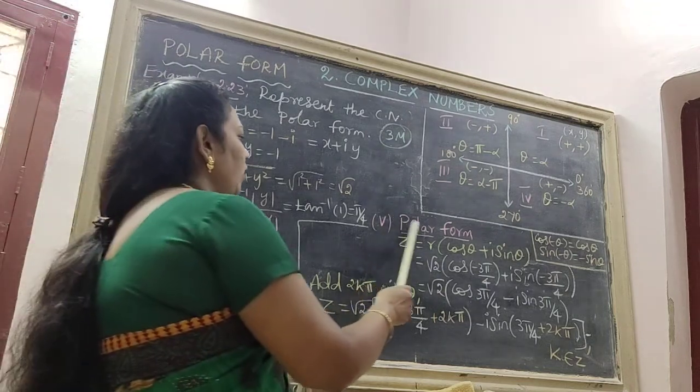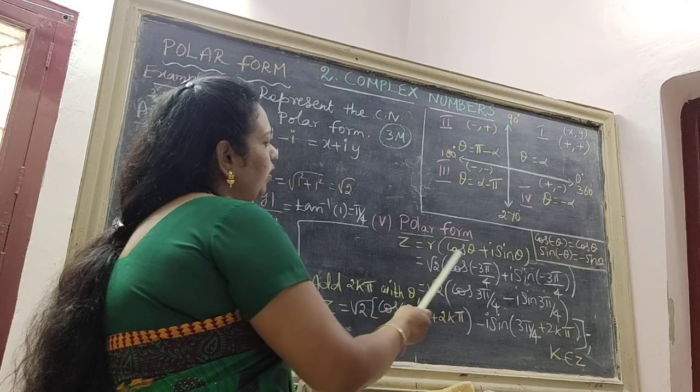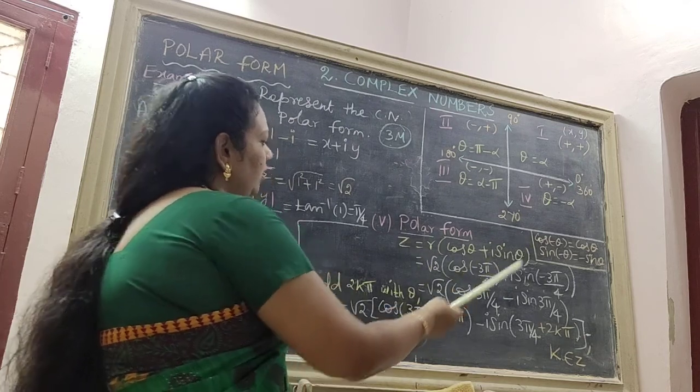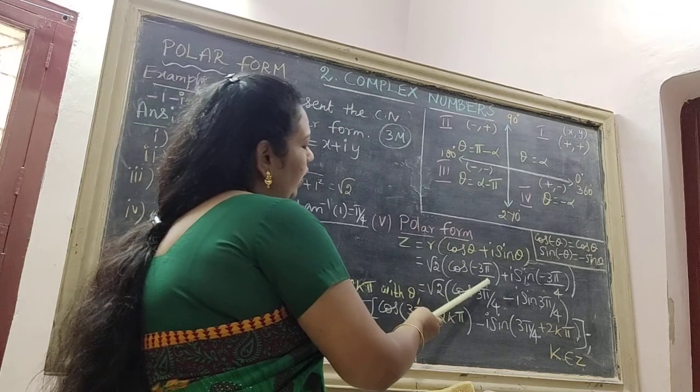Next we, polar form. The formula is z is equal to r into cos theta plus i sin theta. We substitute r value and theta value.